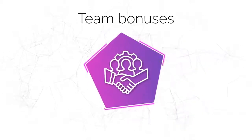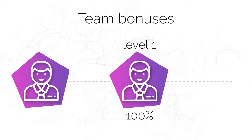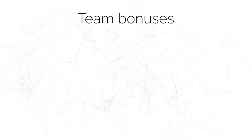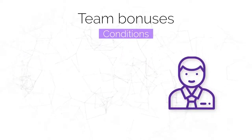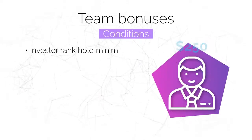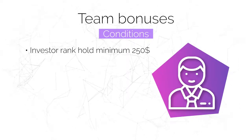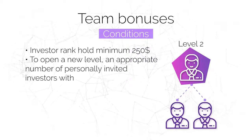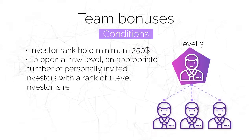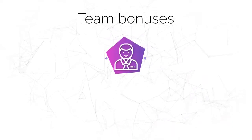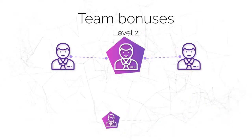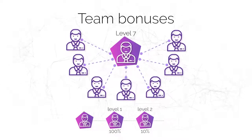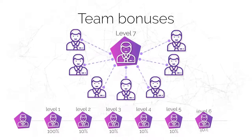Team bonuses: you get 10% of the income of your team from level 2 to level 10. Conditions are investor rank and a hold minimum of $250. To open a new level, an appropriate number of personally invited investors with a rank of investor is required. For example, if you have two personally invited, you receive 10% from the second level; if you have seven, you receive 10% from the second to the seventh level.